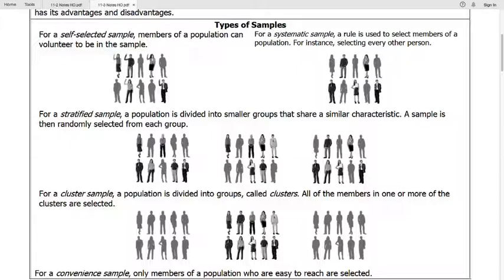Next is a stratified sample. This is when we take a population, we divide it into smaller groups that share common characteristics, and then we randomly select from each of those groups.